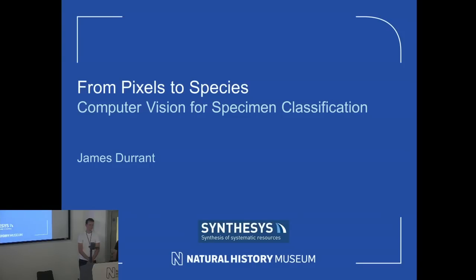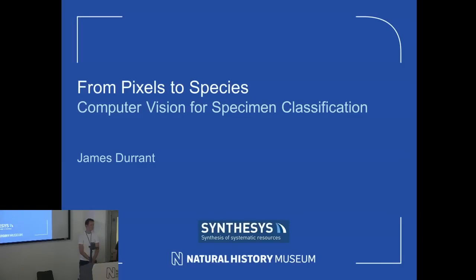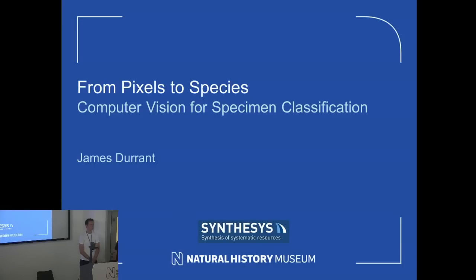James has just finished his second year studying computer science at UCL. He did a really cool project, which was a functional web-based system for automatically tagging the British Library's images from their books — automatically working out whether they were music sheets or whether there were people in the image. James has been applying some of that work to our specimen images. We've been really impressed with his work over the past couple of weeks, so I hope you enjoy his talk. Over to you.